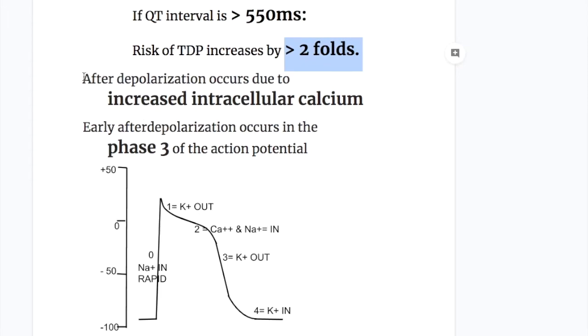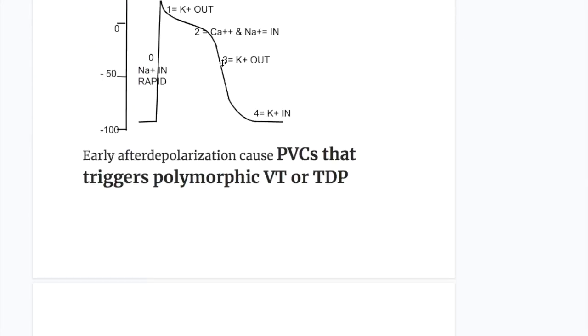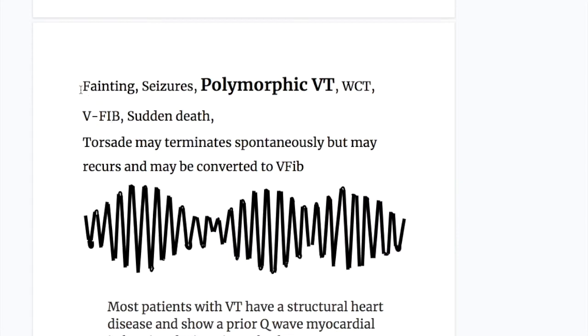This occurs due to after depolarization defect that occurs due to increased intracellular calcium. The two types of after depolarization are early after depolarization that occurs in phase 3 of the action potential. Early after depolarization that occurs in phase 3 causes premature ventricular contractions that trigger polymorphic VTAC or torsades de pointes, causing fainting, seizure, polymorphic VTAC, wide complex tachycardia, ventricular fibrillation and sudden death.